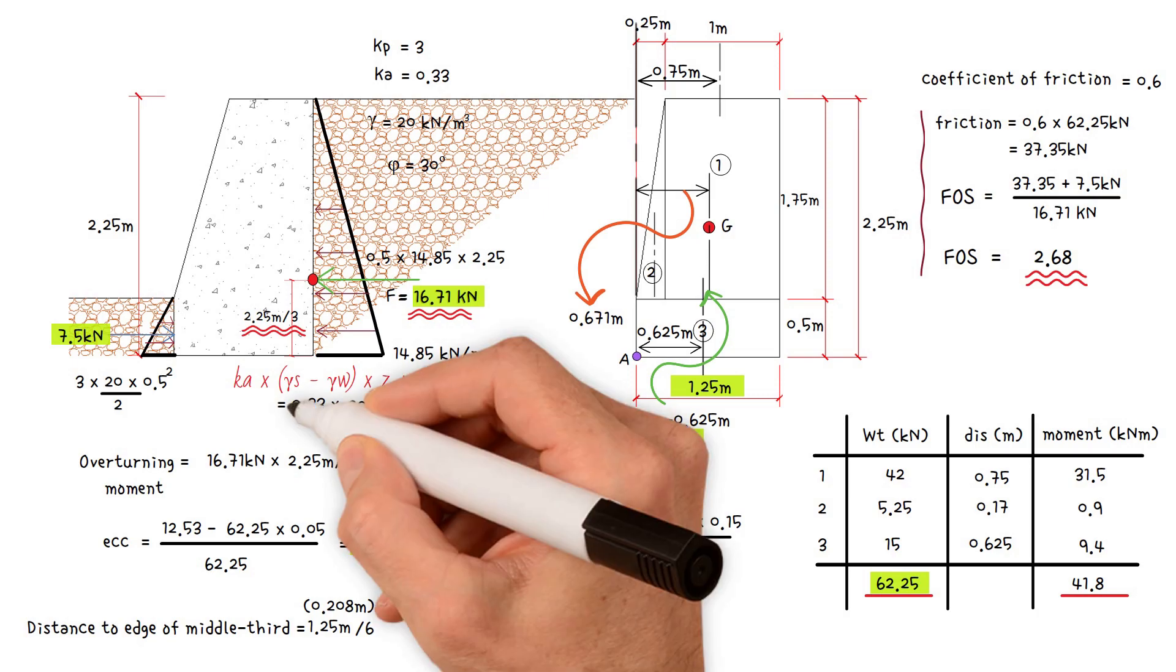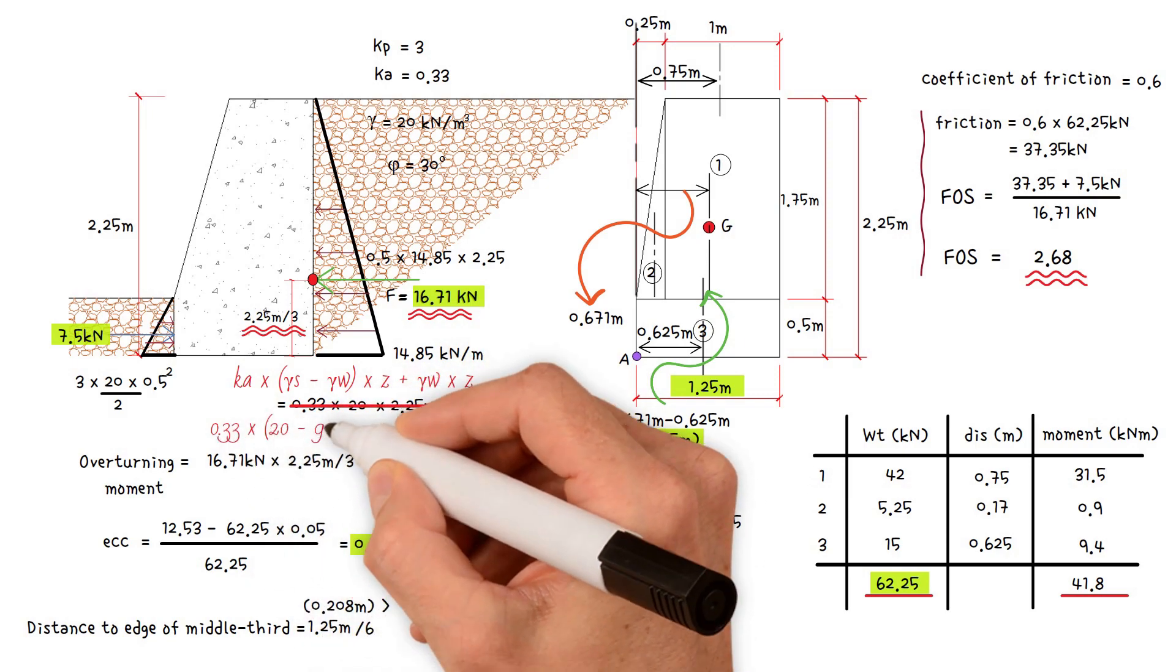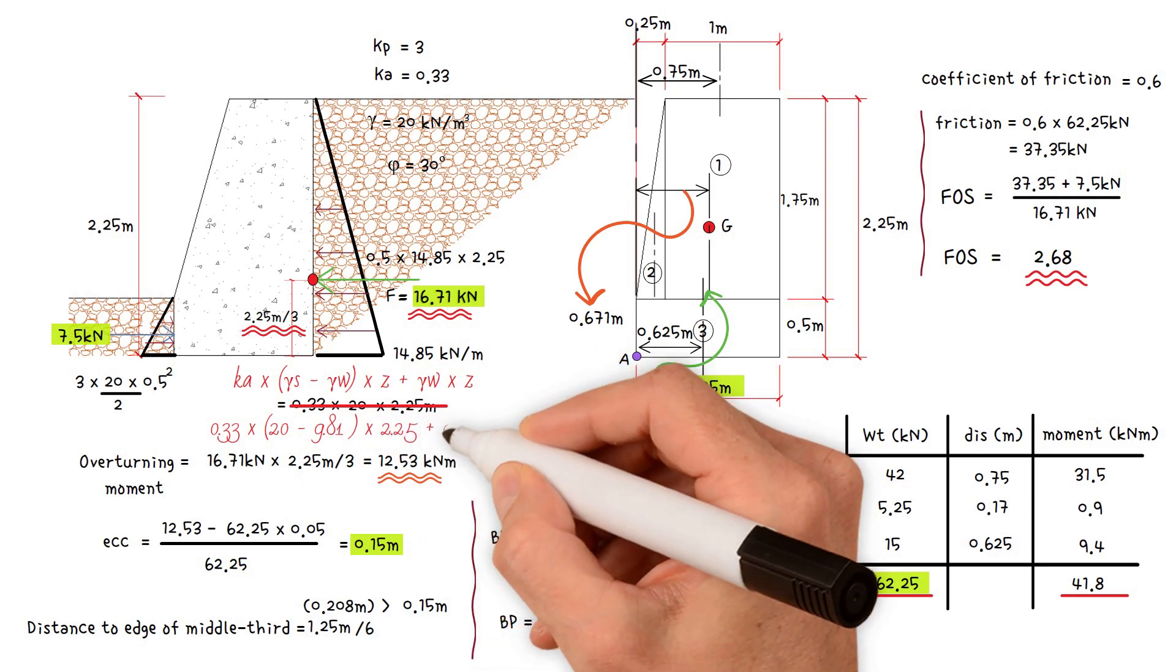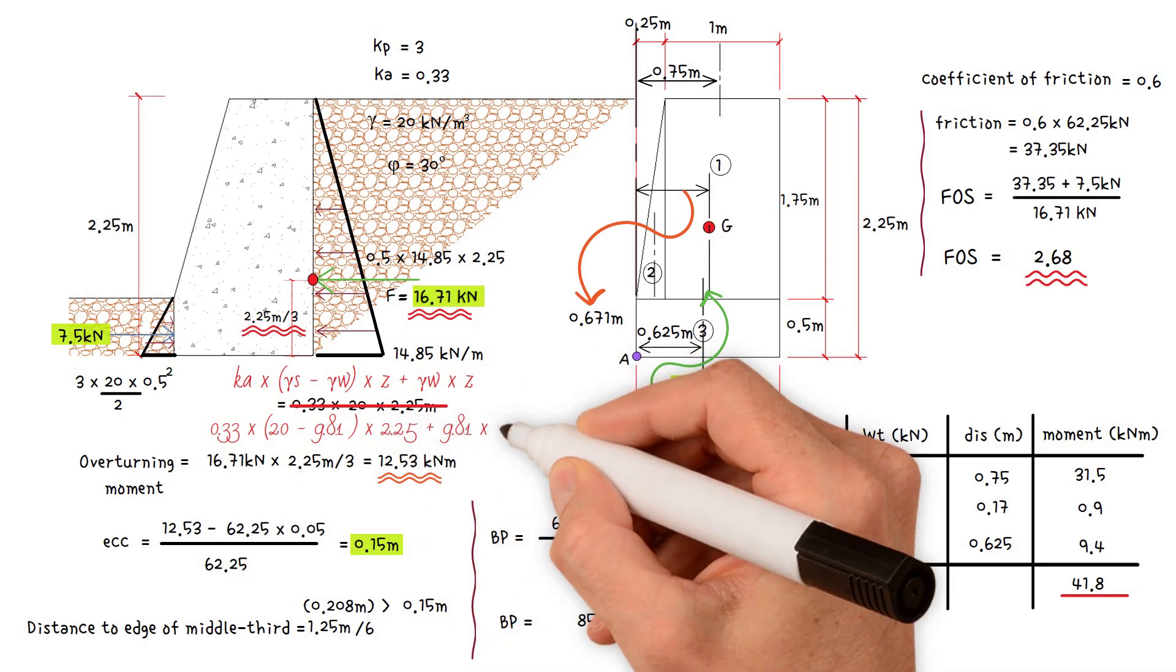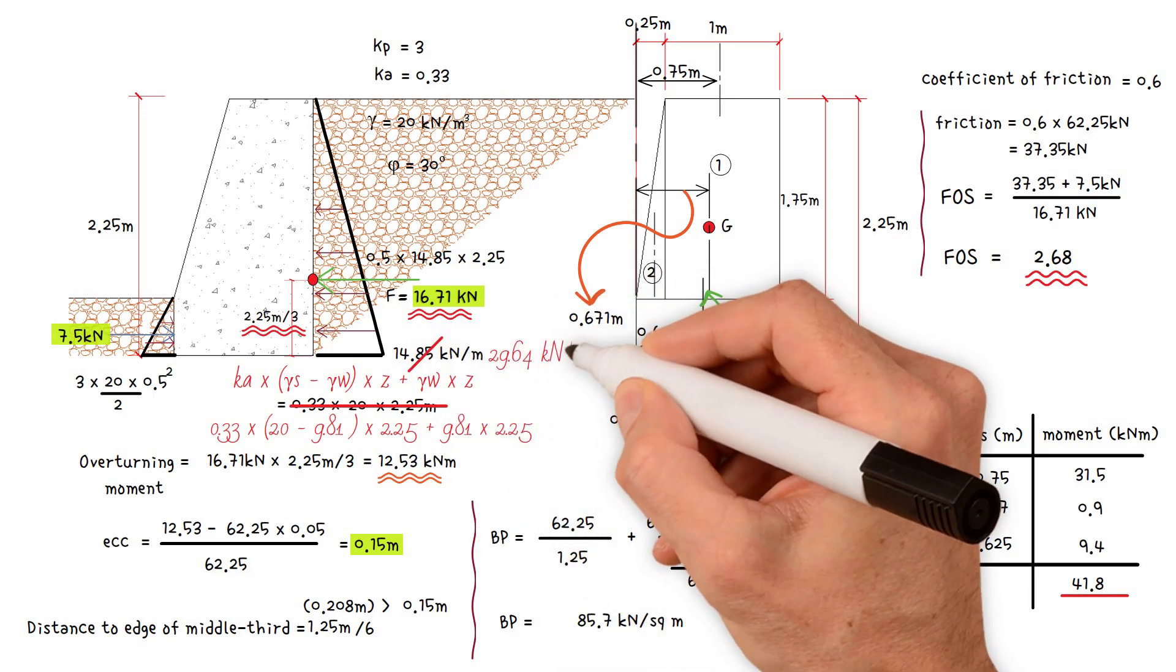So the pressure equals 0.33 times 20 minus 9.81 times 2.25, plus 9.81 times 2.25. We get a value of 29.64 kilonewtons per meter.